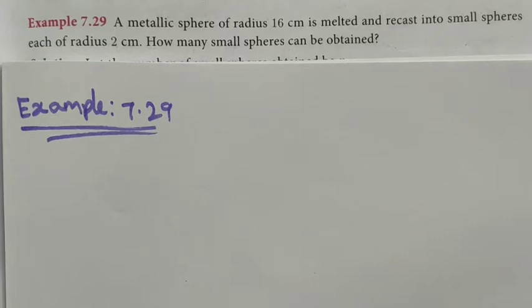Hi students, class 10 example sum 7.29. A metallic sphere of radius 16 centimeters is melted and recast into small spheres each of radius 2 centimeters. How many small spheres can be obtained?